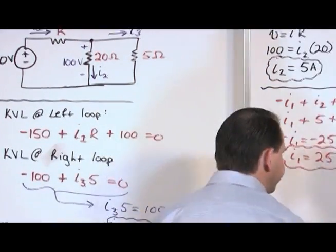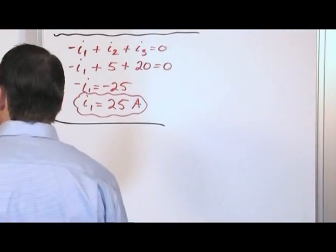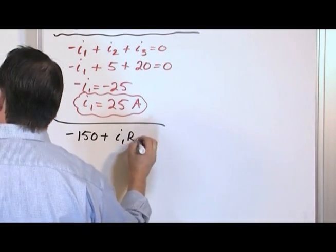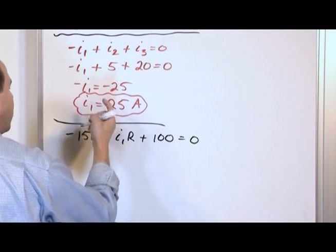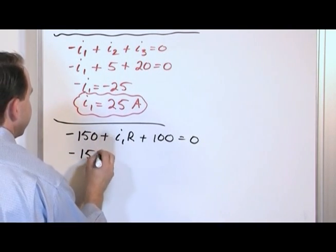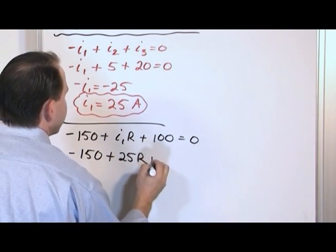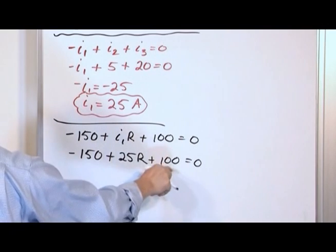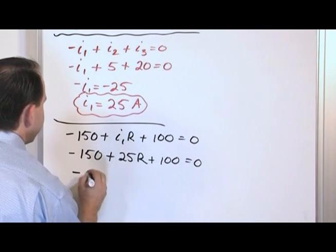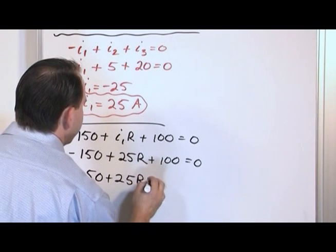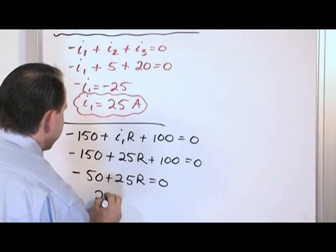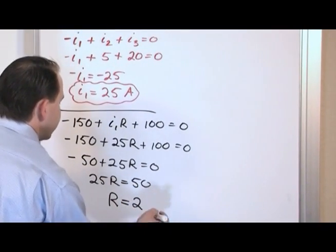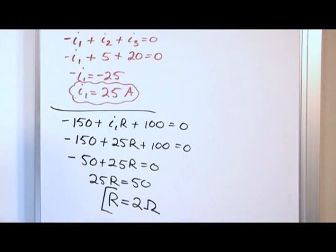Now we go back to the left loop KVL equation: negative 150 plus I1·R plus 100 equals 0. We now know I1 is 25, so: negative 150 plus 25R plus 100 equals 0. Adding those constants: negative 50 plus 25R equals 0. Moving the 50 over: 25R equals 50. So the value of the resistor R equals 2 ohms.